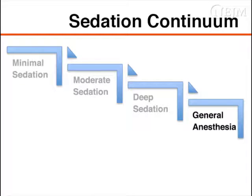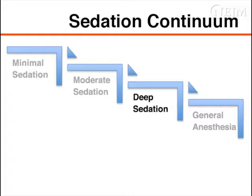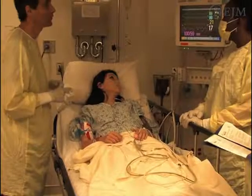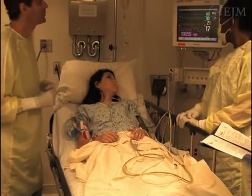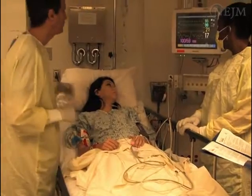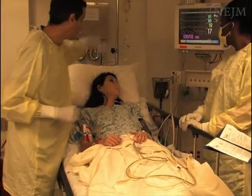When the bounds of deep sedation are exceeded, the patient has reached the state of general anesthesia — unresponsive to painful stimulation and at high risk for airway obstruction and apnea. Immediate rescue measures may be indicated to support airway patency and ventilatory function until the patient returns to a lighter level of sedation. Patients will often move up and down the continuum during a procedure, so it is critical to monitor continuously and be prepared to rescue them from levels of sedation deeper than intended.